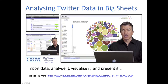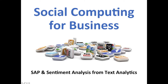You can click into one of those categories — for example, one item shown on screen relates to parliament bills that have been debated. You can see which MPs debated which bills and which were present for all the debates. You import the data into Big Sheets, analyze it, visualize it, and then present it.